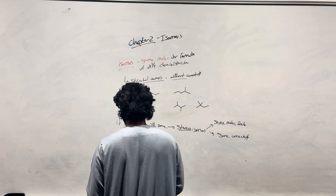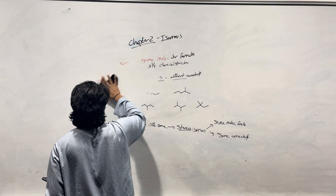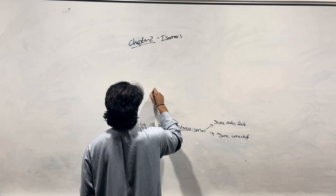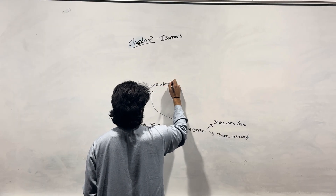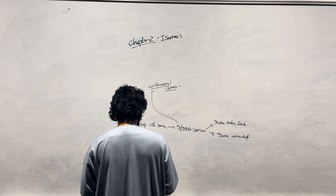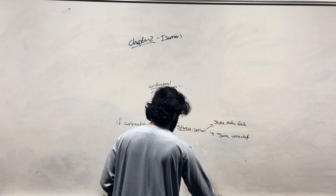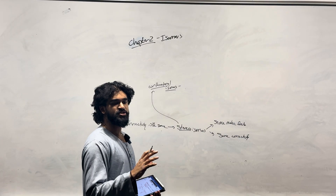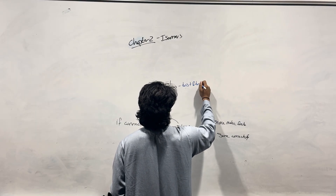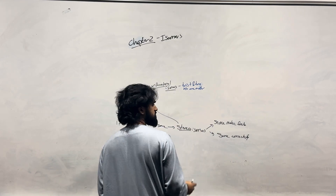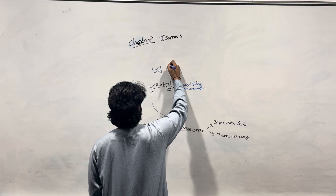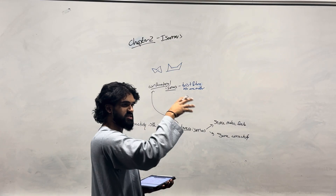Under stereoisomers, we have a couple of classes. First, we have conformational isomers. These are molecules that can twist and turn into one another — changing conformation just means changing your shape a little bit. Something like a chair and a boat can twist and turn into one another.